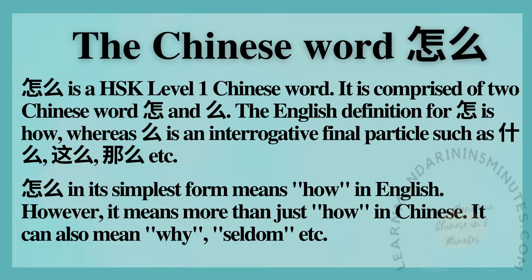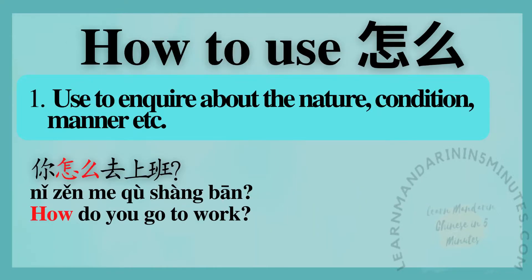怎么 in its simplest form means 'how' in English. However, it means more than just 'how' in Chinese. It can also mean 'why', and more. How to use 怎么: No. 1 — used to inquire about the nature, condition, manner, etc.